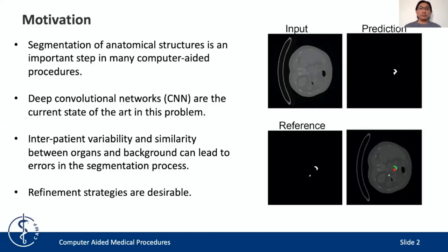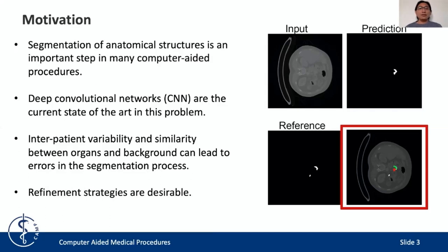For example, when we compare the prediction with the reference in the figure here, we can see a group of false positives indicated in red, and also a group of false negatives indicated in white, together with the true positives indicated in green. This problem can be addressed by adding a refinement step, usually at the end of the inference process.